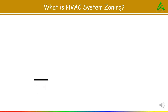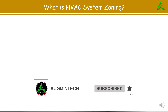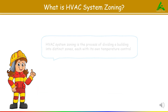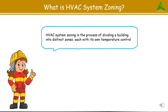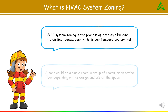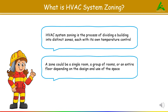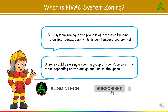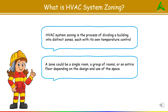First of all, we have to discuss what is HVAC zoning. So HVAC system zoning is the process of dividing a building into distinct zones, each with its own temperature control. This allows for precise heating and cooling tailored to the specific needs of each zone. A zone could be a single room, a group of rooms, or an entire floor depending on the design and use of the space.